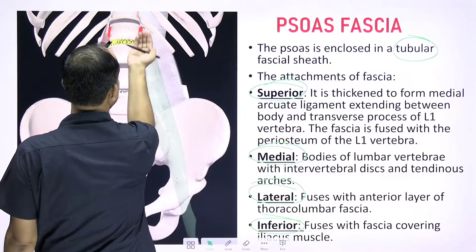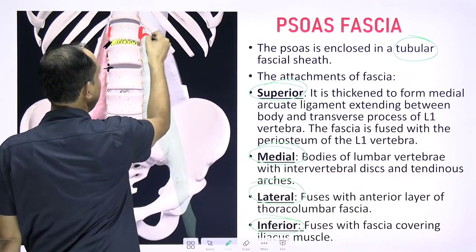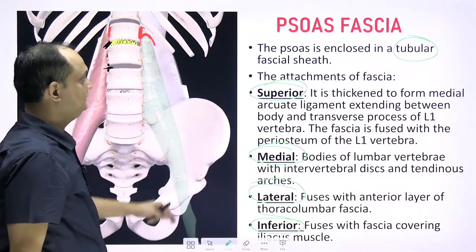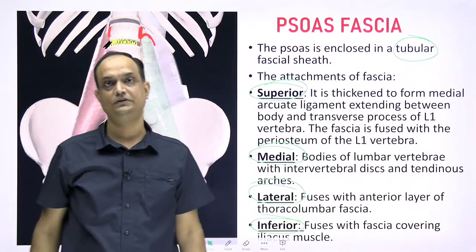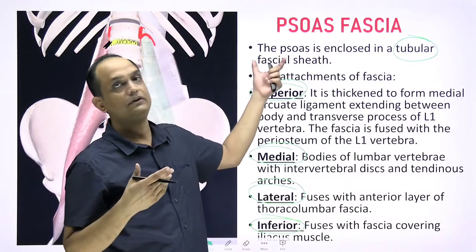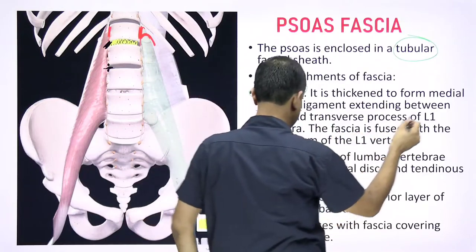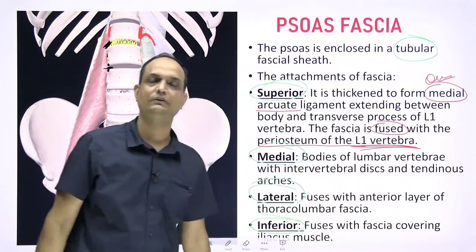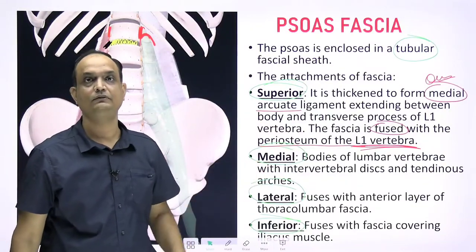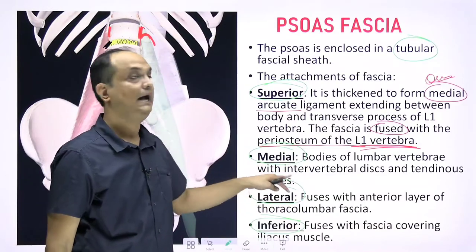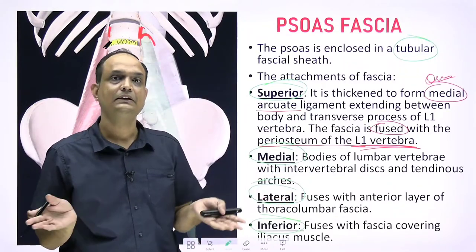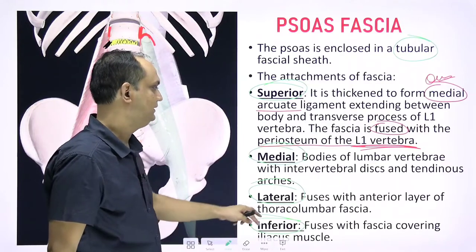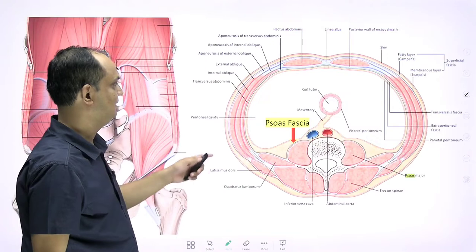Second, anteriorly the fascia thickens and this thickening is known as the medial arcuate ligament, from where the fibers of the diaphragm take origin. An important exam question: the medial arcuate ligament is a modification of the anterior part of the psoas fascia. Superiorly, it also fuses with the periosteum of the L1 vertebra. Medially, the fascia attaches to the bodies of the lumbar vertebrae and the intervertebral discs — this medial attachment is what makes this fascia uniquely and clinically more important than others.